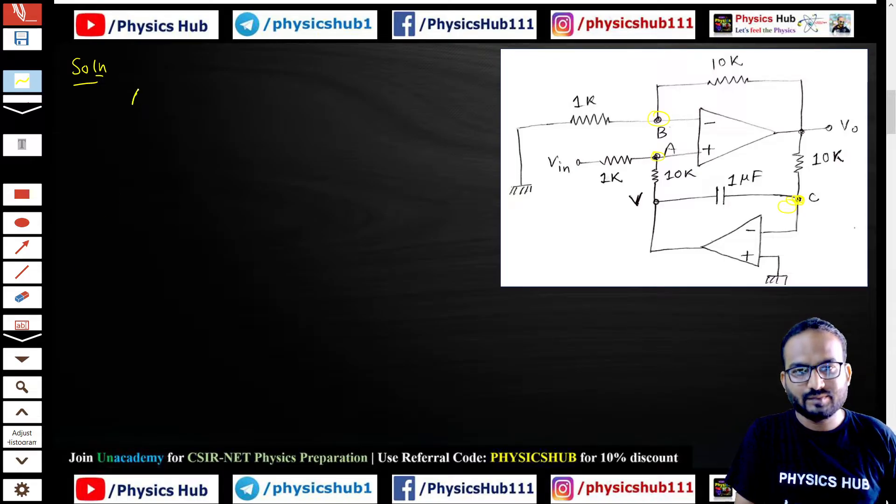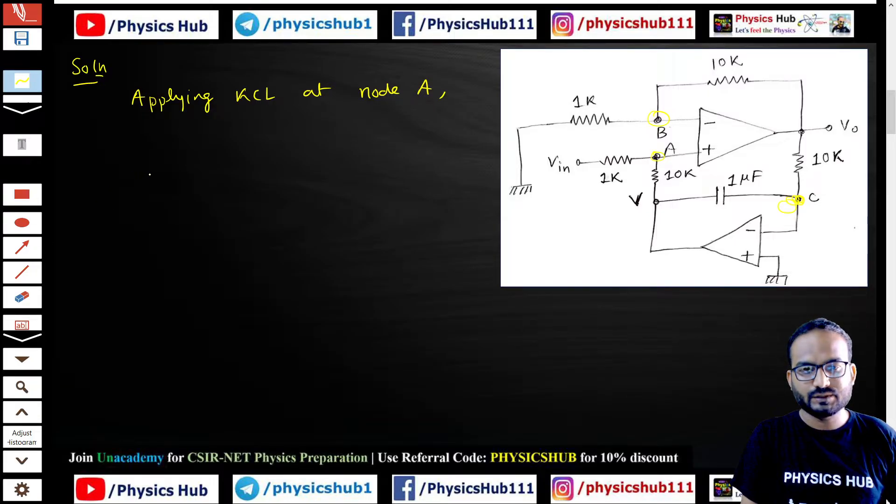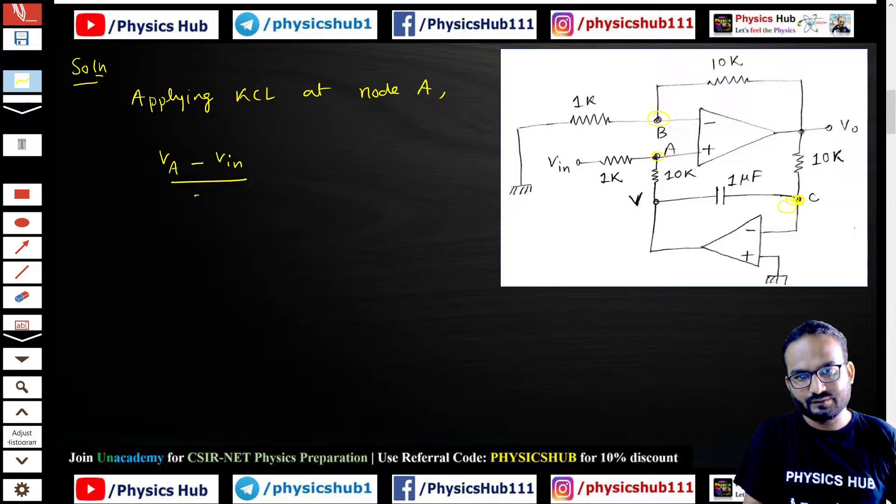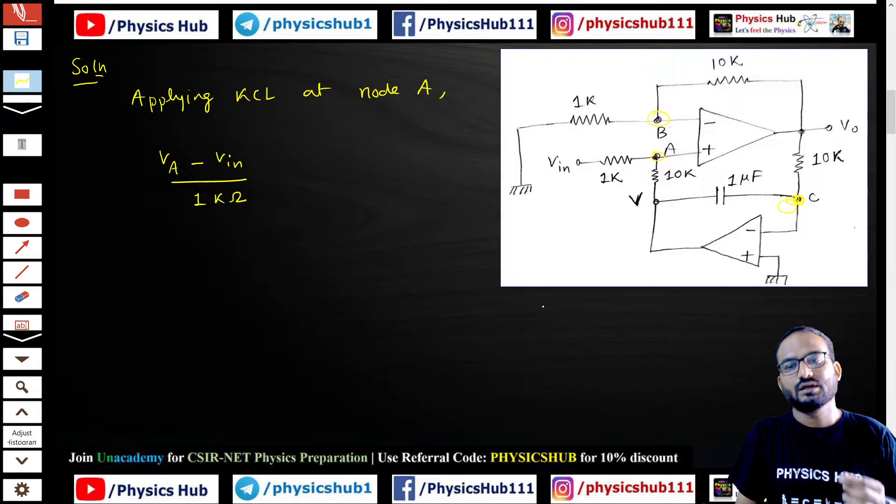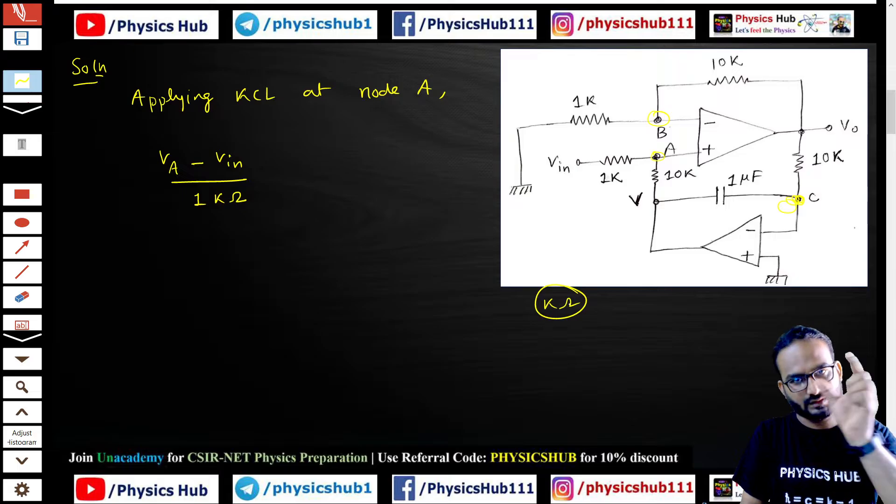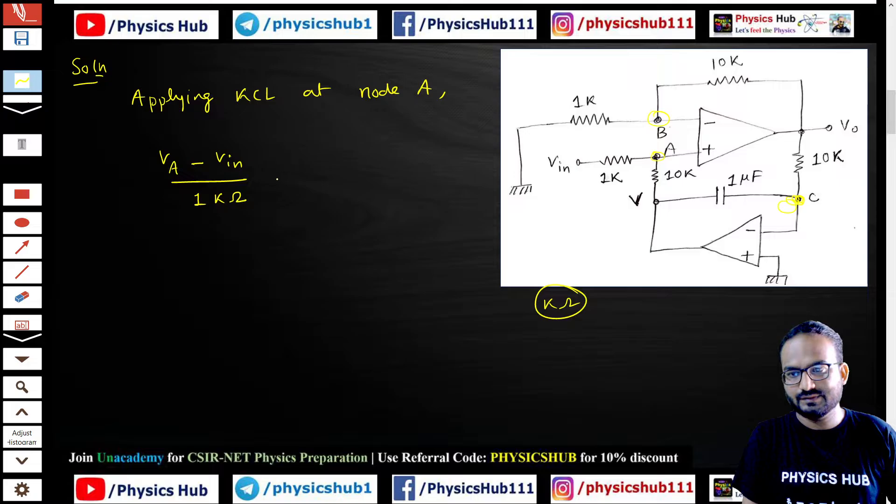First of all we are applying Kirchhoff's current law at node A. If I apply KCL at node A, you're going to get V_A minus V_in by one kilo. Let me tell you beforehand that all the resistances we are considering in kilo ohms. V_A minus V_in, as per Kirchhoff's current law, current entering should equal current leaving because this is the conservation of charge.